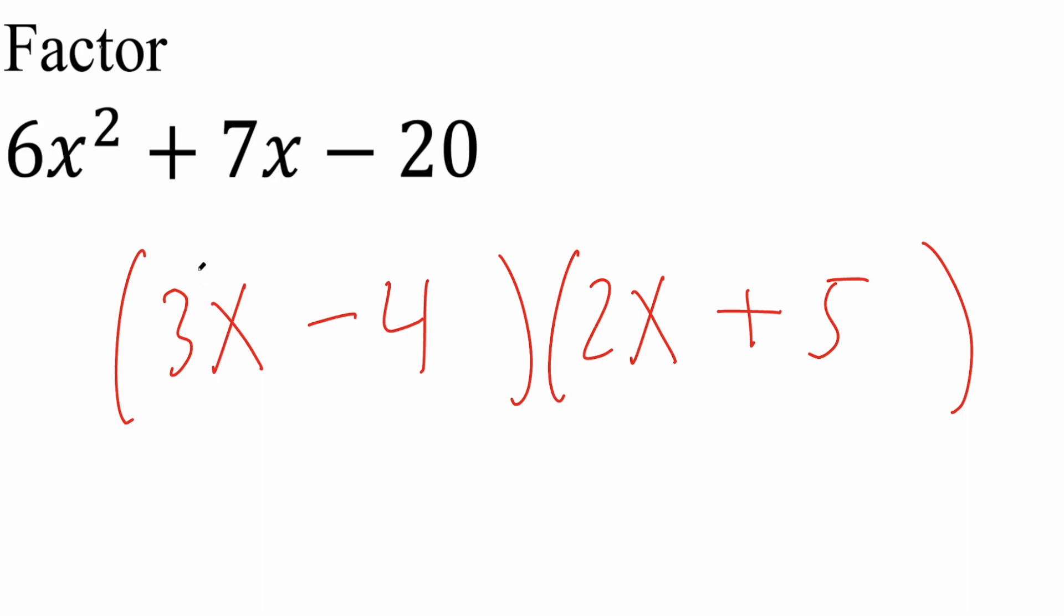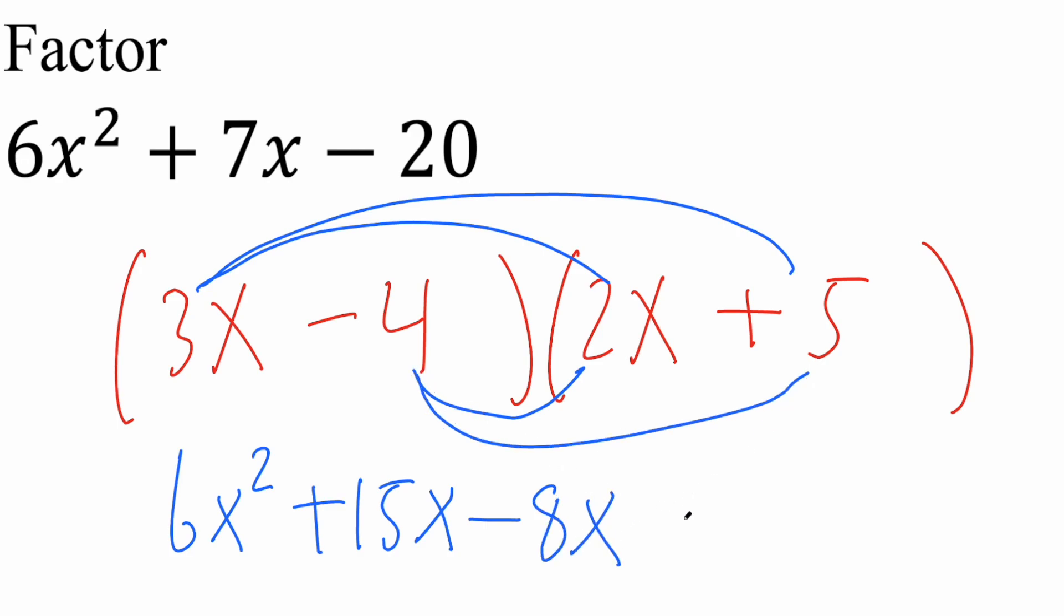And we can always check by expanding. So 3x times 2x is 6x squared. 3x times 5 is going to give us 15x. Negative 4 times 2x is negative 8x. And negative 4 times 5 is negative 20. And let's see if it matches. 6x squared matches, negative 20 matches. And again 15x minus 8x is in fact 7x. And that's pretty much it for this problem.